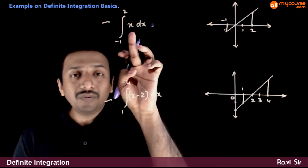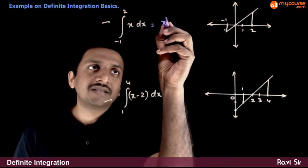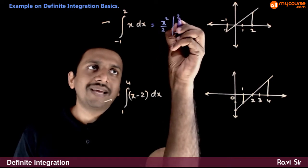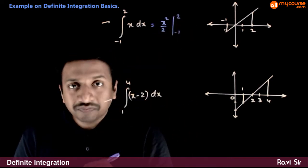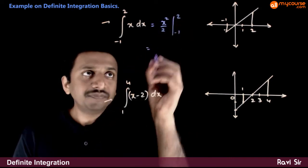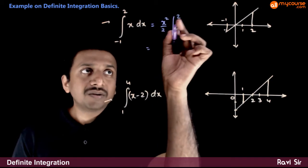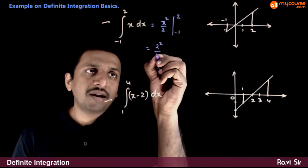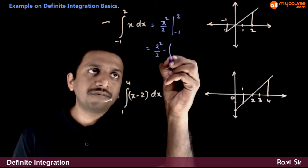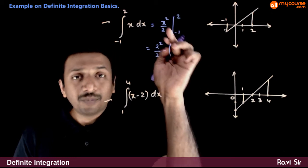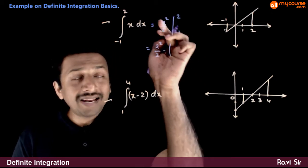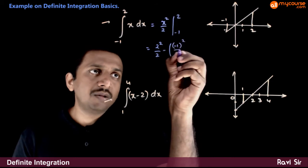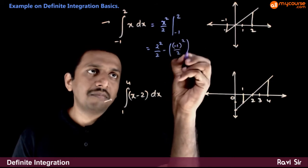The integration is equal to — we know that the integration of x is x square by 2, between the limits minus 1 and 2. If you put the upper limit, you get 2 square by 2 minus, if you put minus 1 in the place of x, minus 1 whole square by 2.